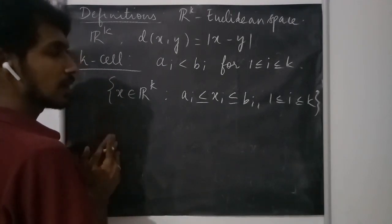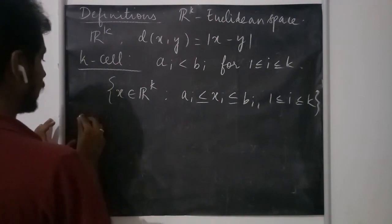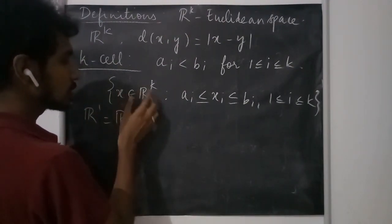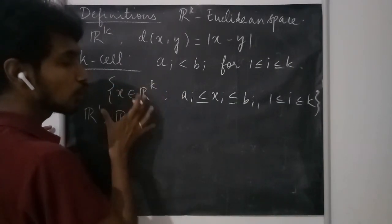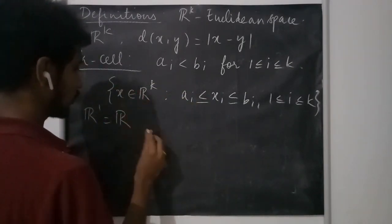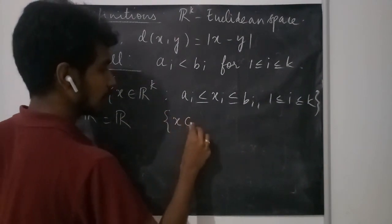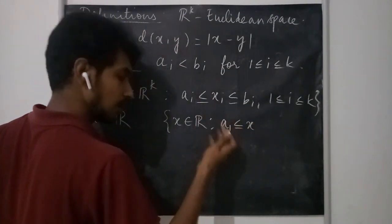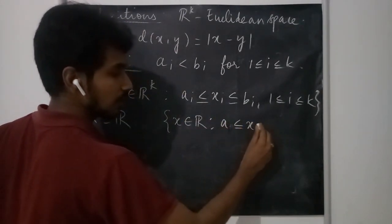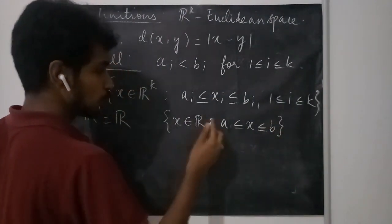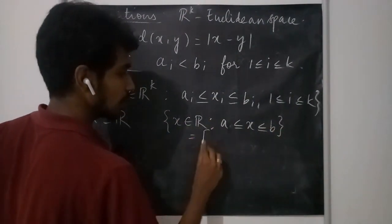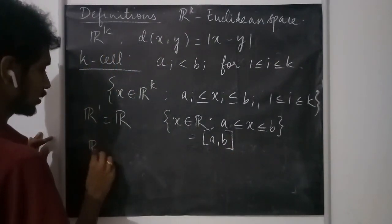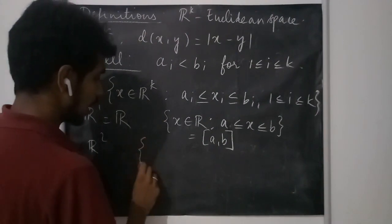Let us see what the k-cell is in R1, that is on the real line. It is going to be of only one dimension, so it will consist of elements satisfying a1 ≤ x ≤ b1, which means it is simply a closed interval. Now let us consider what the k-cell is in R2.